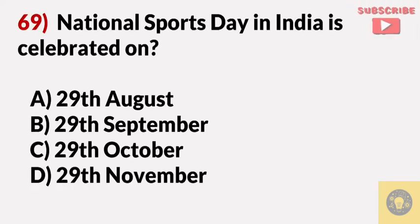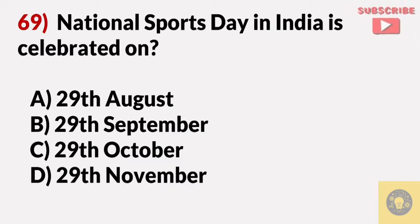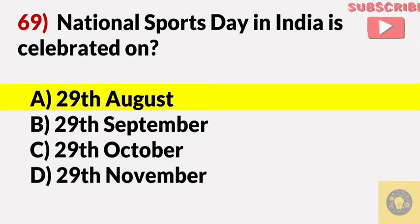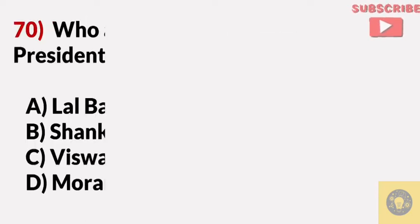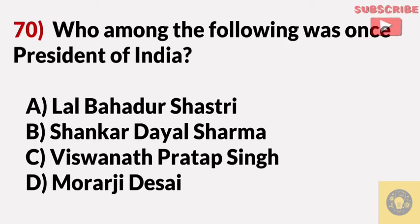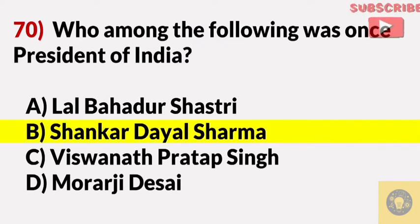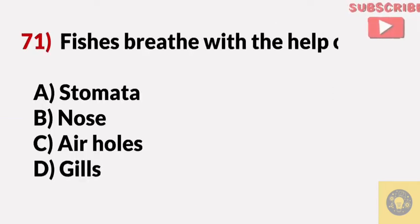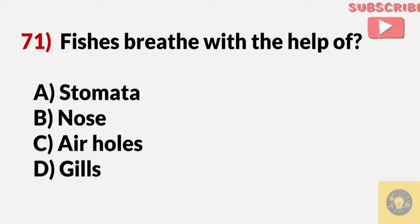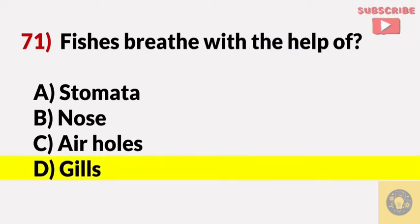National Sports Day in India is celebrated on? Answer A, 29th August. Who among the following was once President of India? Answer B, Shankar Dayal Sharma. Fishes breathe with the help of? Answer D, gills.